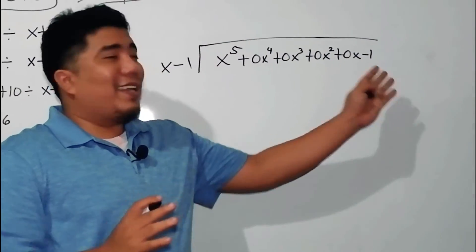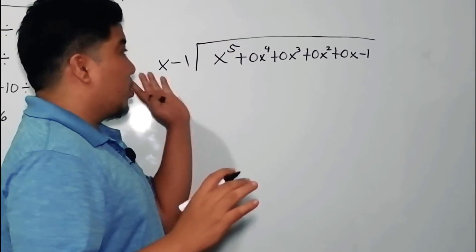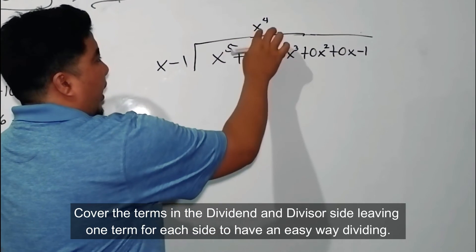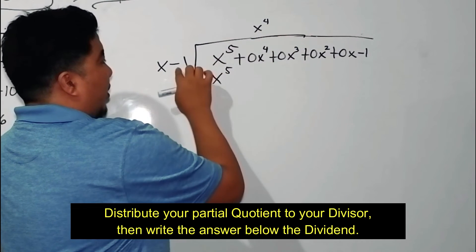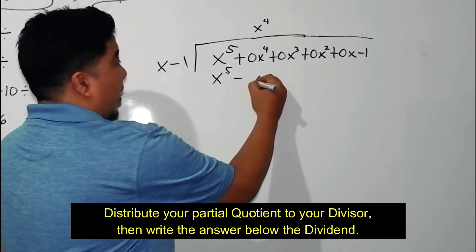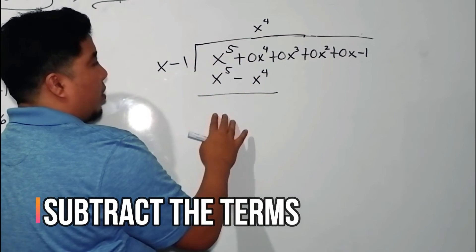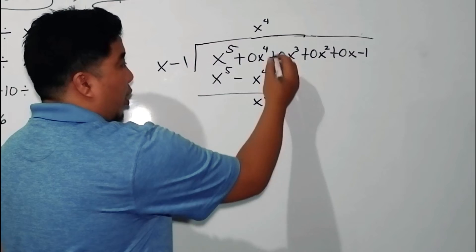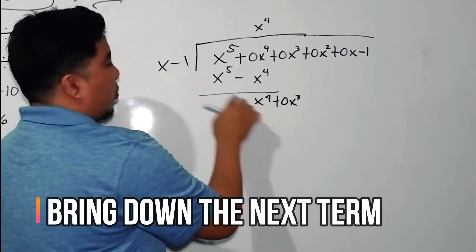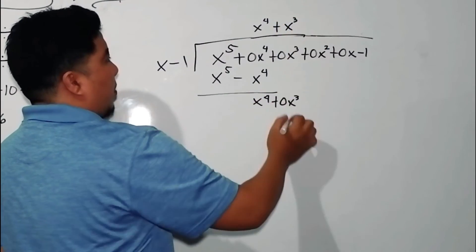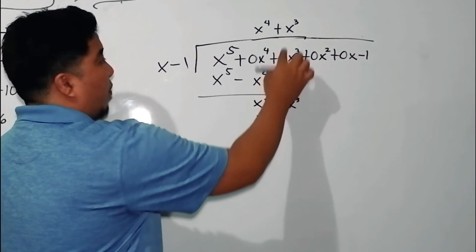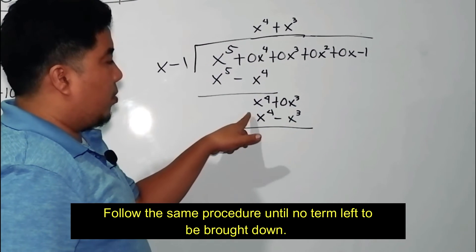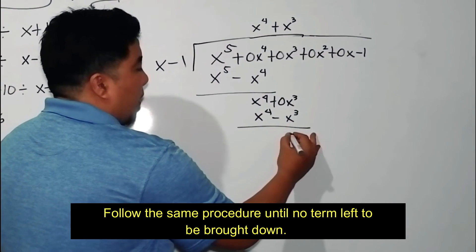Our given is now very long, but do not worry because we can still solve this. Divide: x to the 5th divided by x gives x to the 4th. x to the 4th times x is x to the 5th; x to the 4th times negative 1 is negative x to the 4th. Subtract: this will be 0. 0 minus negative x to the 4th gives positive x to the 4th. Bring down 0x cubed. Divide: positive x cubed. Multiply: x to the 4th, then negative x cubed. 0 minus negative x cubed gives positive x cubed. Bring down 0x squared.